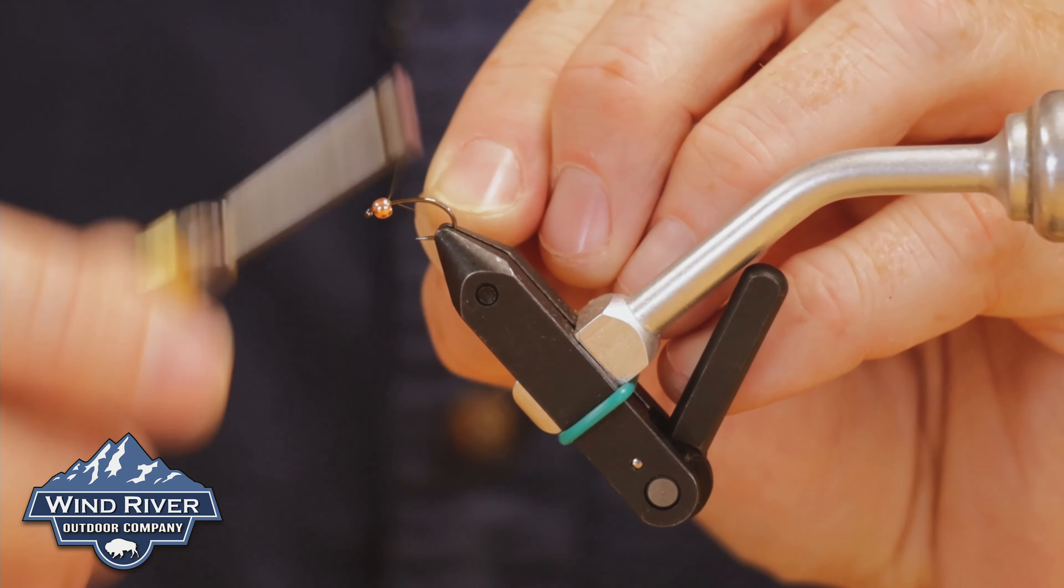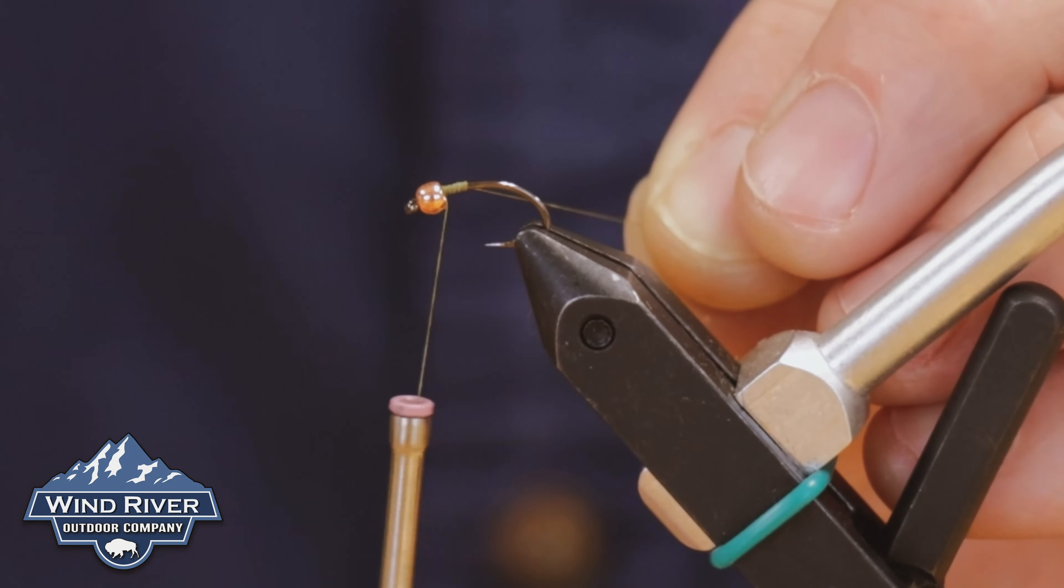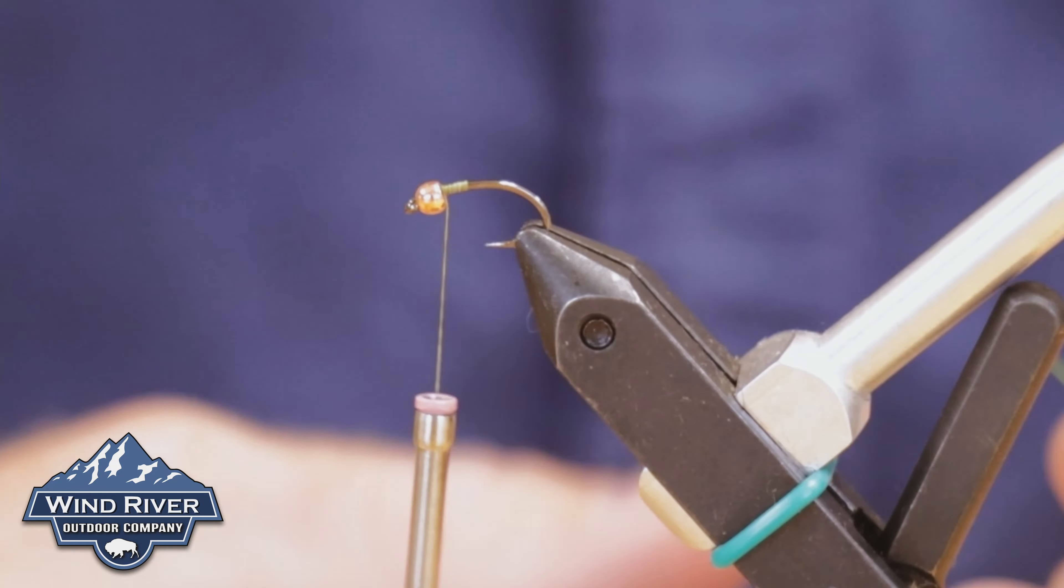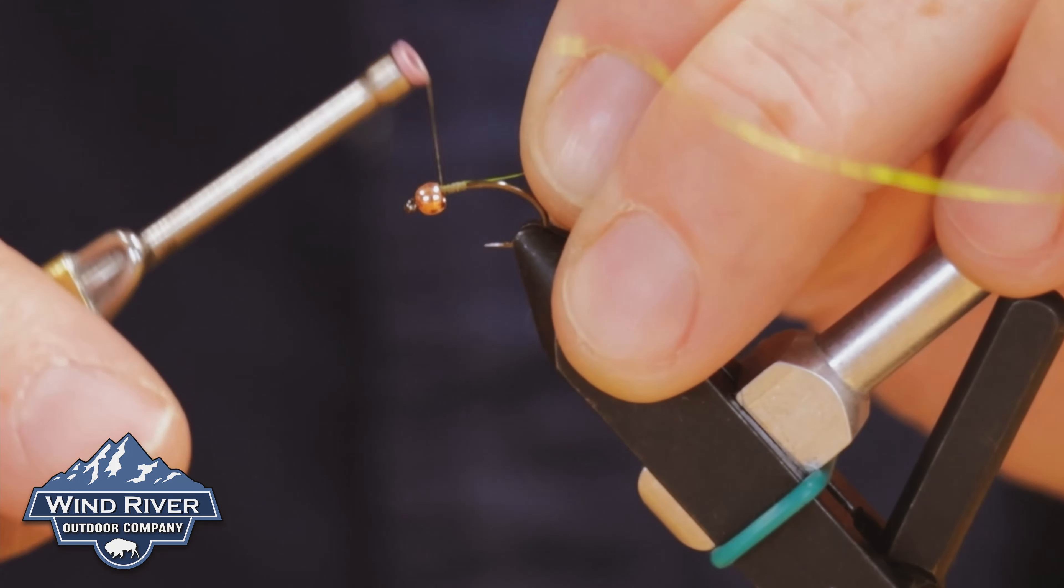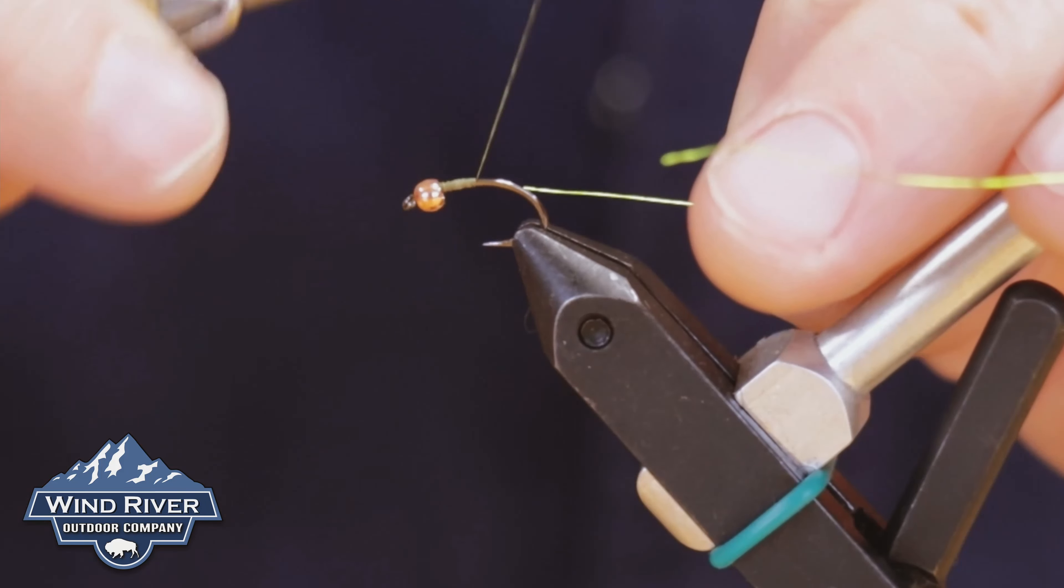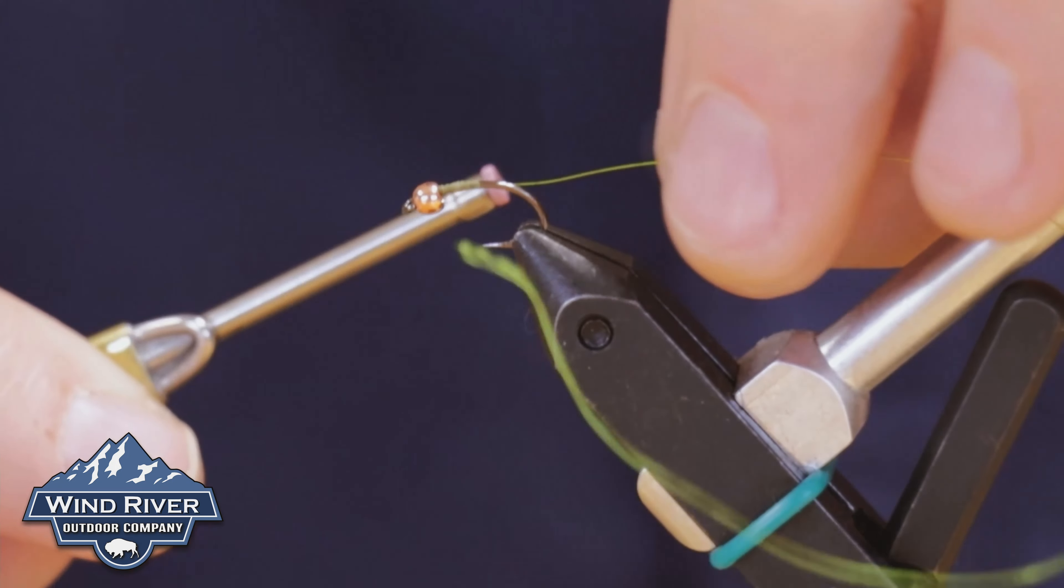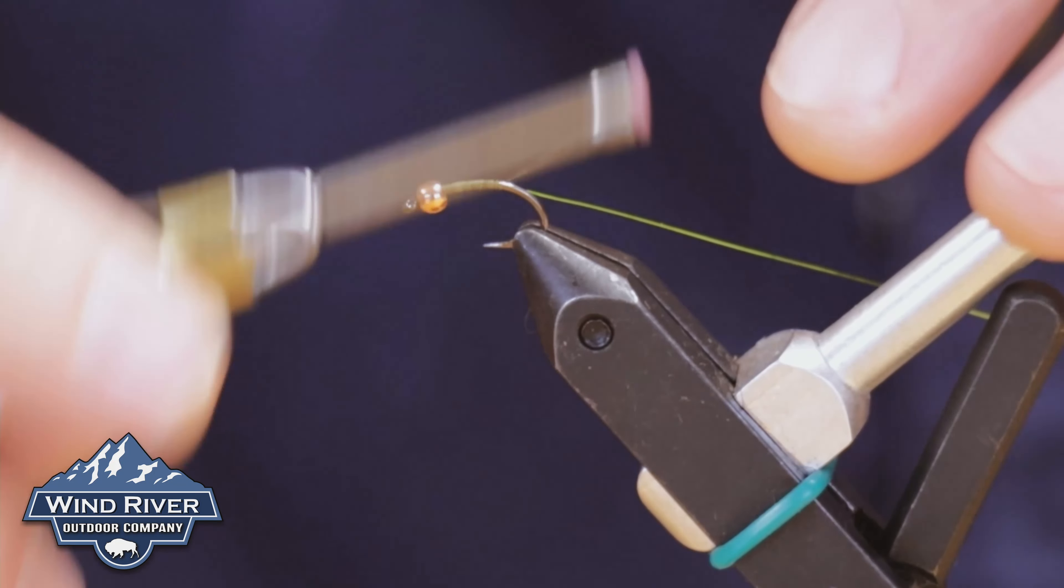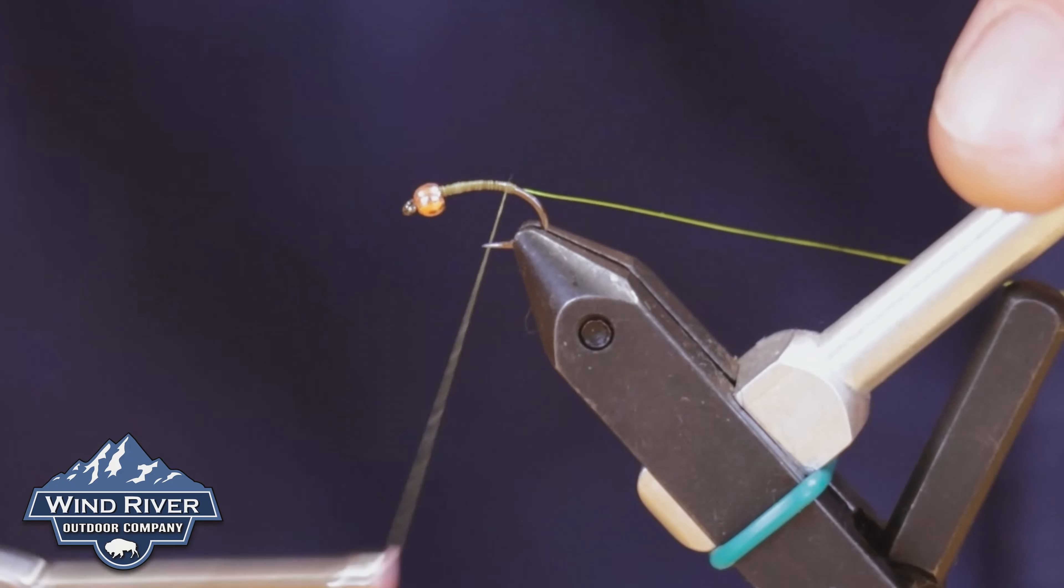So we're going to start our thread right behind the bead, and we're going to move it just a little bit back here. Then we're going to wrap back over our wraps, make sure we're nice and secure in there. I'm going to come in, clip that thread, and then I'm going to come in with my wire. Secure it right behind the bead there. Normally I'll tie it at a 50 degree angle and then pull it in and adjust it. So we're going to go ahead and run this back. I'm going to run this back to about where the point of the barb would be, and then stop there and then run it back up.